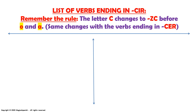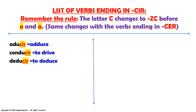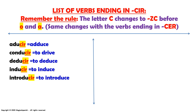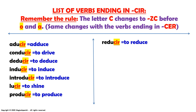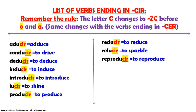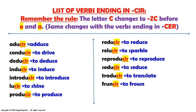Lista de los verbos terminados en CIR. Remember the rule: the letter C changes to ZC before O and A. Same changes with the verbs ending in CIR. Aducir, conducir, deducir, inducir, introducir, lucir, producir, reducir, relucir, traducir, fruncir, esparcir.